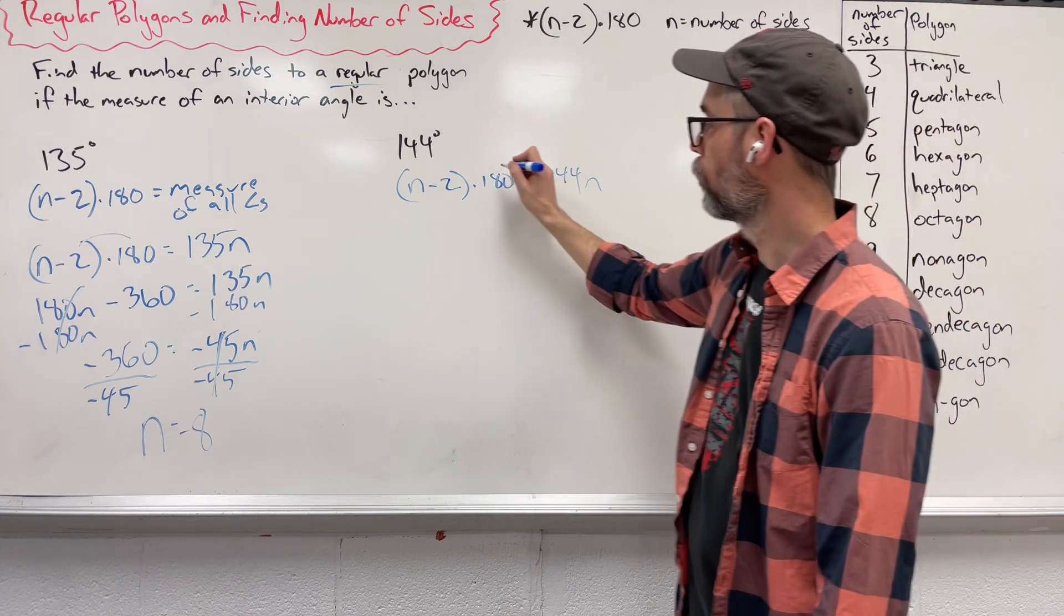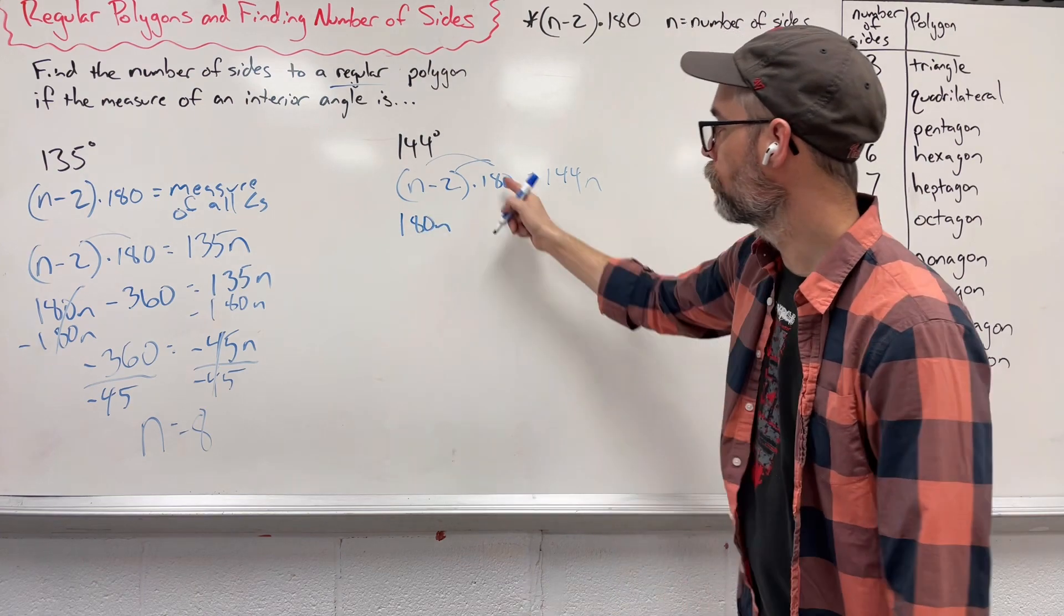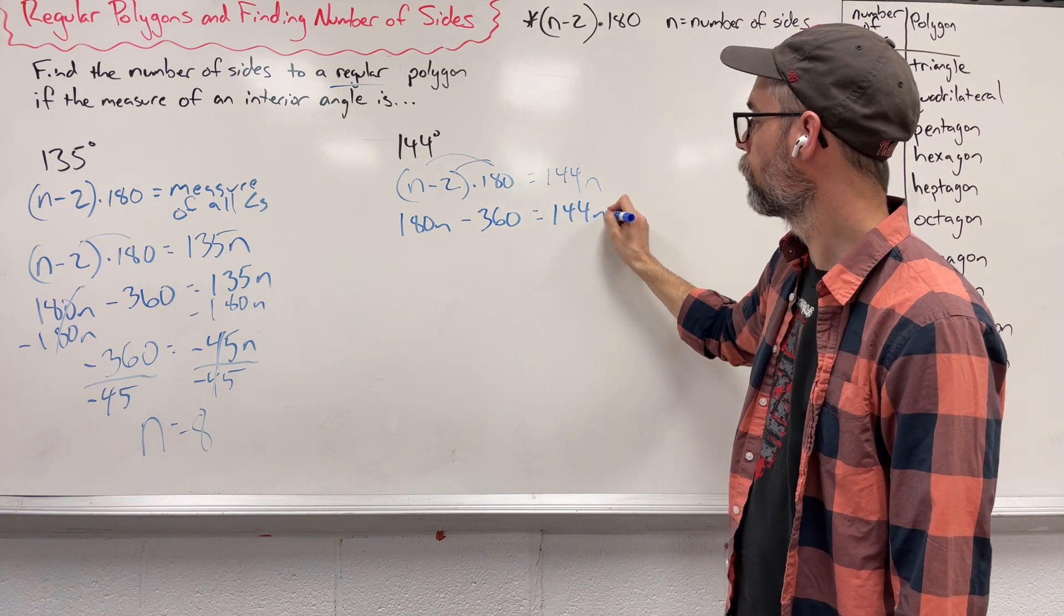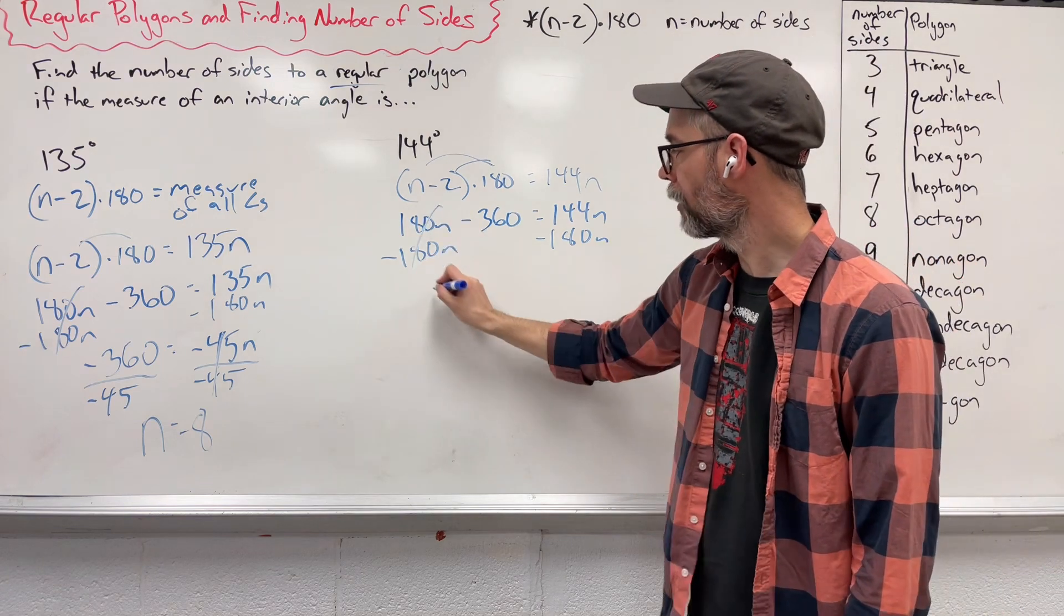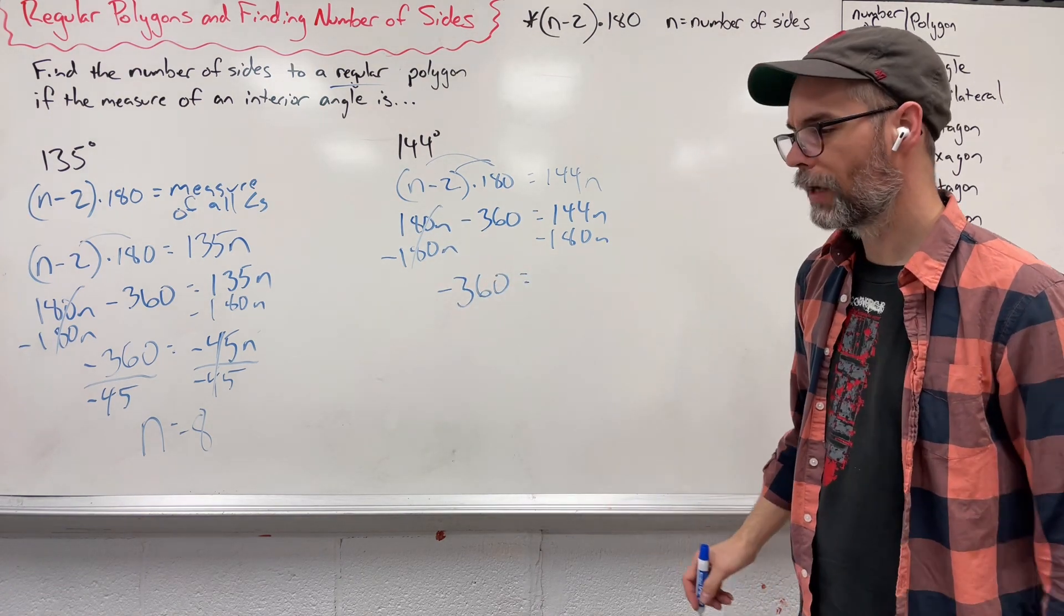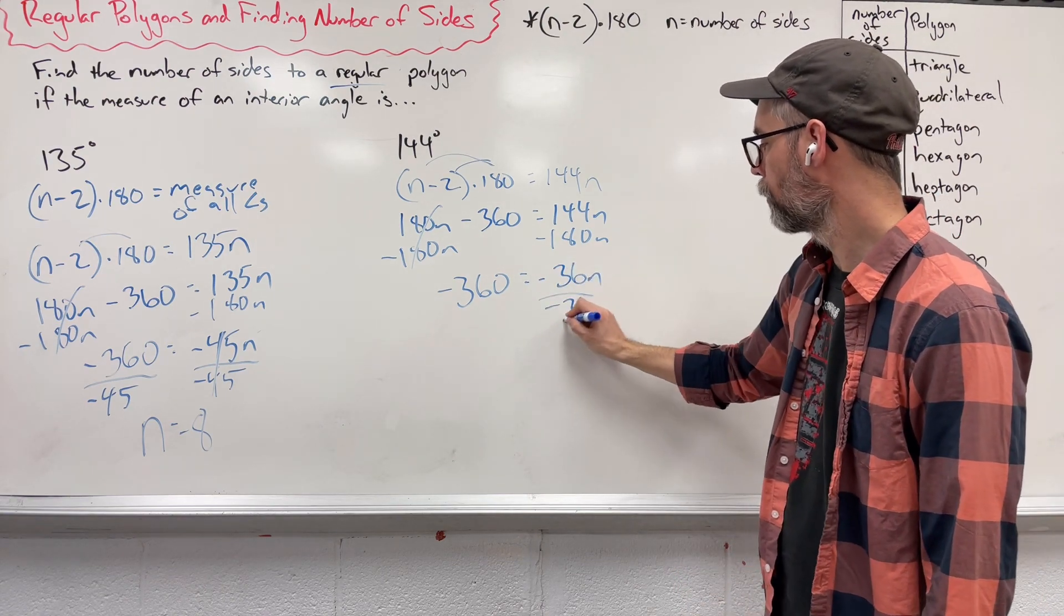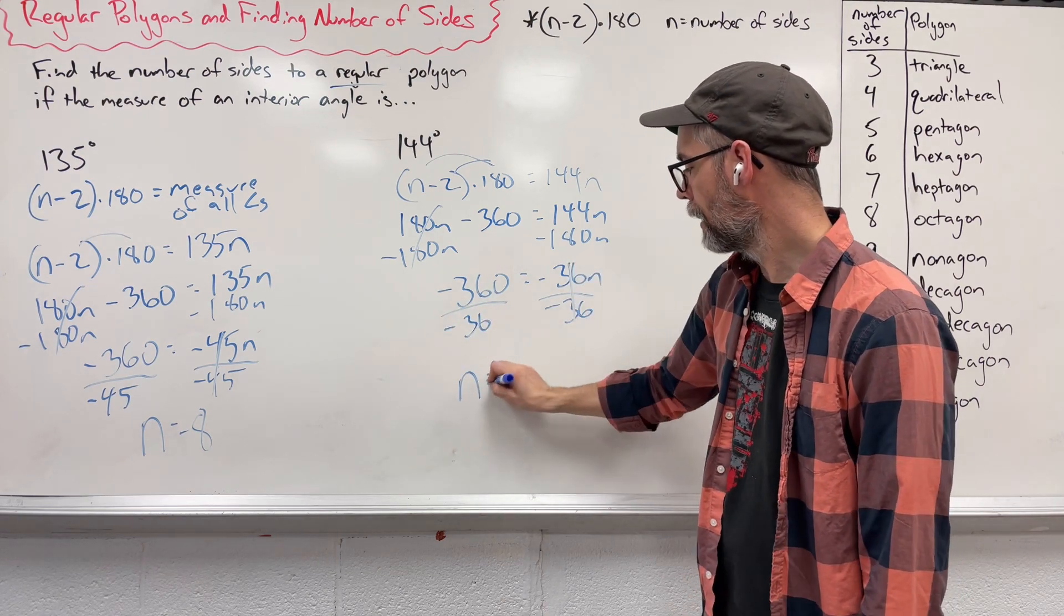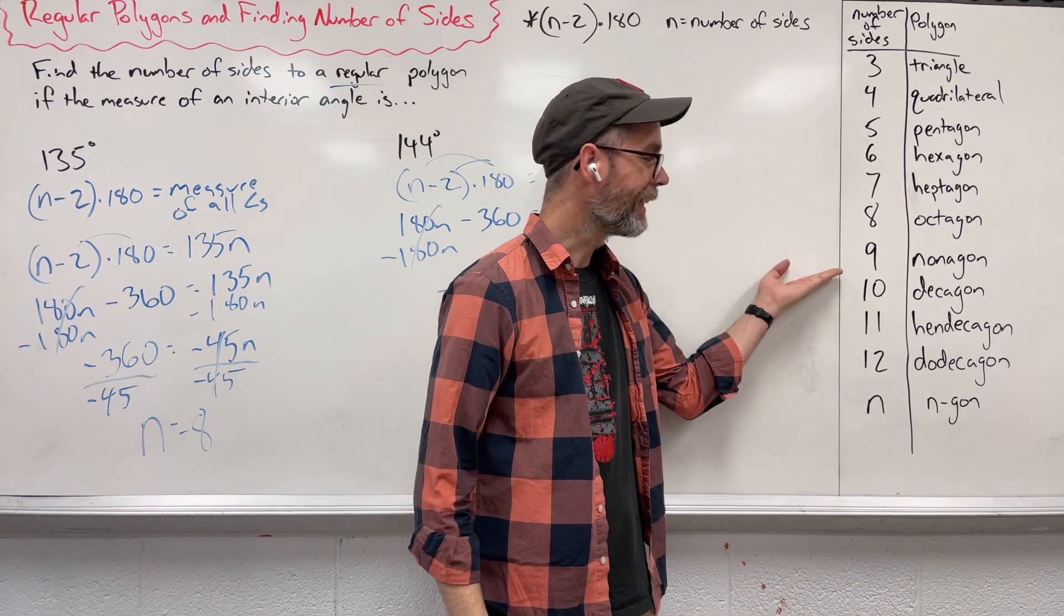We're going to say 180 times n gives us 180n. 180 and negative 2 gives us negative 360 equals 144n. Move the 180n leaving us with a negative number again. 144 and 180 gives us minus 36n. Divide by that negative 36. n ends up being 10. We have a 10-sided figure called a decagon.